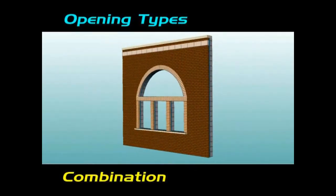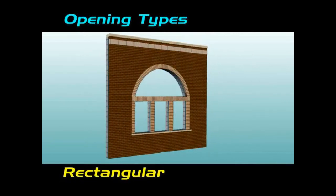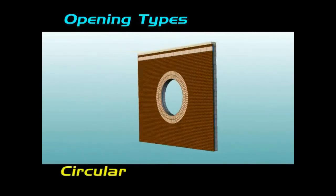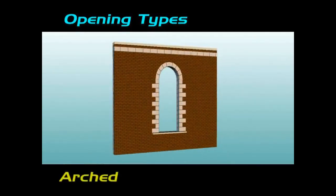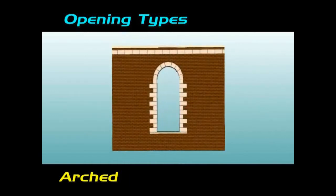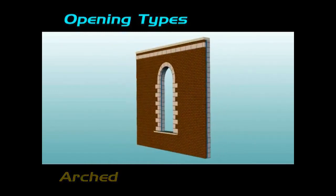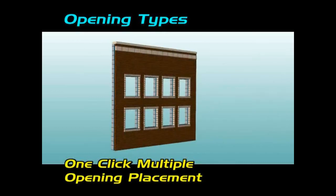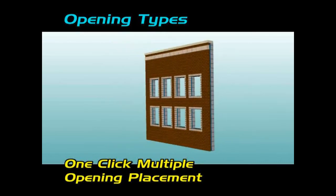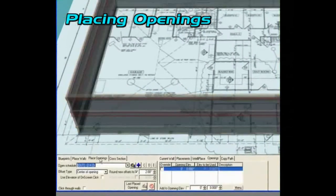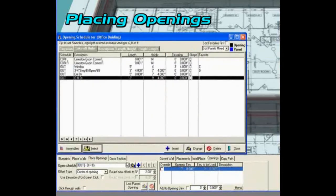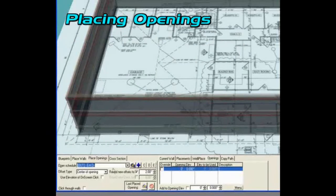Create the opening that meets your needs — combination, rectangular, circular, arch. Utilize the one-click multiple opening placement. When you place the openings, the walls become transparent, making opening placement very easy. Select which offset type you want to use, like center of opening, and place your openings.